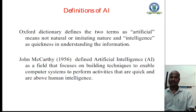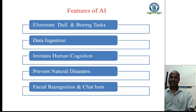He defined artificial intelligence as a field that focuses on building techniques to enable computer systems to perform activities that require human-level intelligence. These are the definitions of artificial intelligence. Then we go to see the features of artificial intelligence: eliminate dull and boring tasks, data ingestion, imitate human cognition, prevent natural disasters, and patient recognition.